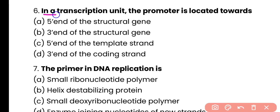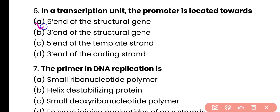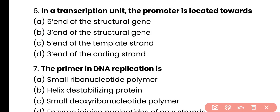Question number 6. In a transcription unit, the promoter is located towards: 5' end of structural gene, 3' end of template strand, 5' end of template strand, or 3' end of coding strand? Correct answer is option A. The promoter is located upstream to the transcription initiation site at the 5' end of the structural gene. So correct answer is option A.